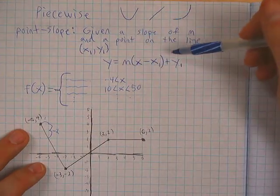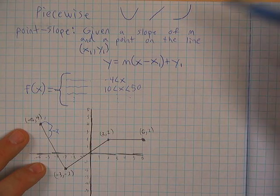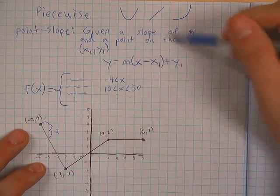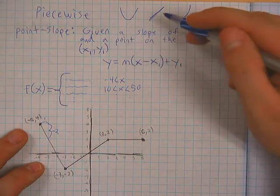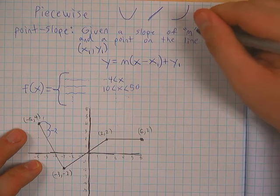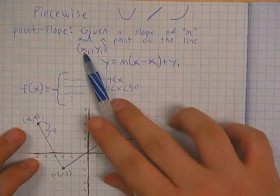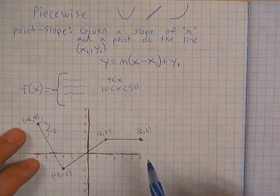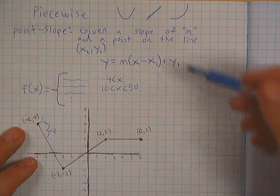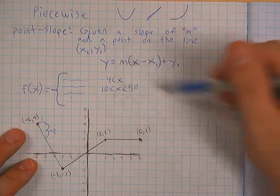Before we go into writing a piecewise function, some background knowledge we're going to need is the use of point-slope form. Point-slope form is just a way to write the equation of any straight line. It says that given a slope of m and a point on the line — we'll call that point x-sub-1 comma y-sub-1 — we can write the equation of the line as y equals our slope m...